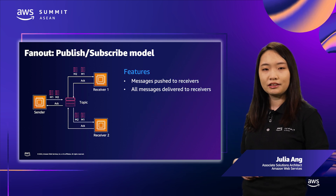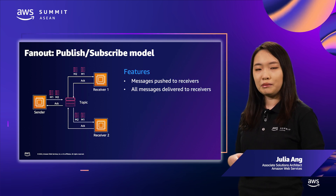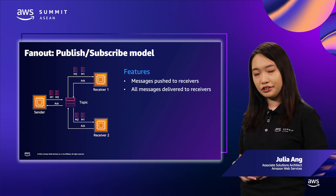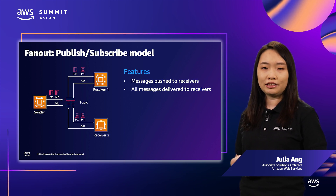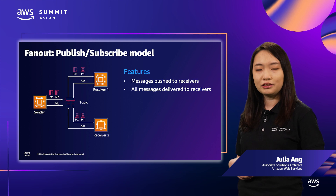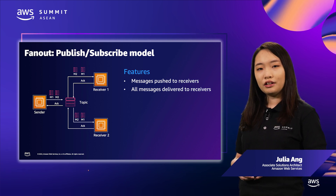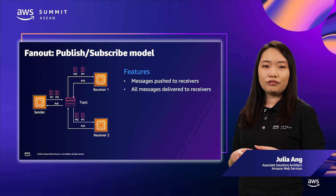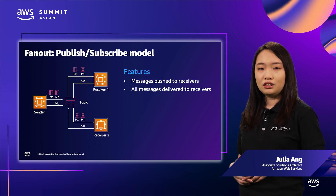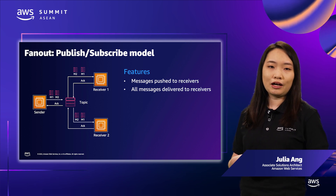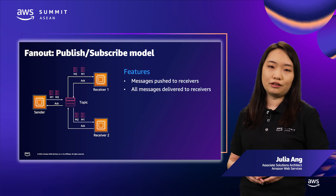The second pattern is the publish-subscribe pattern, or pub/sub for short. This is ideal when you want the same message to be processed by multiple downstream consumers. A copy of each message is delivered to all receivers, and interested receivers subscribe to a topic — messages are then pushed out to them.